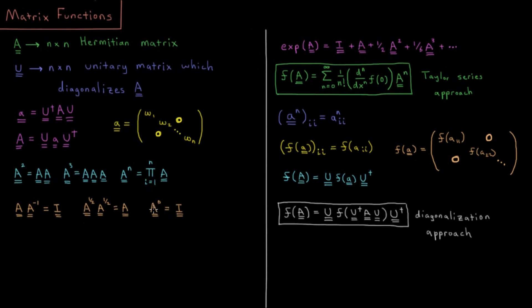A to the zero — if we imagine A to the first is A, and A to the minus first is the inverse, then an identity matrix must be A to the zero.